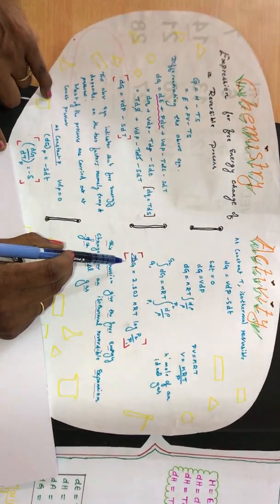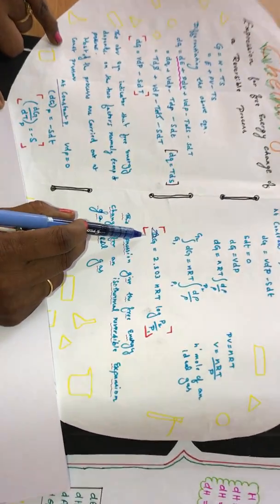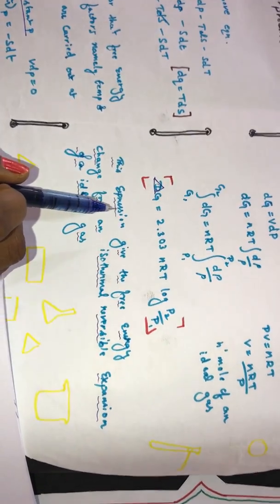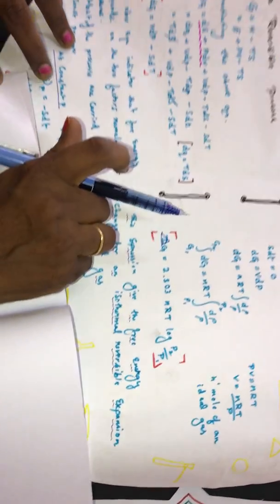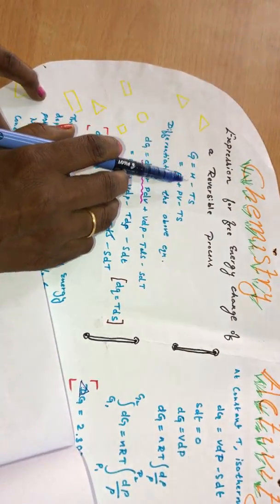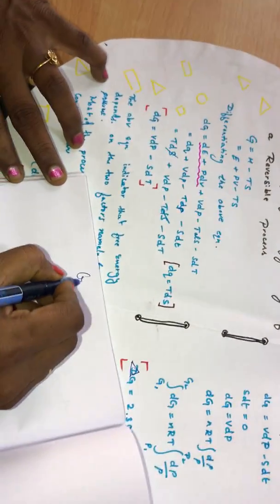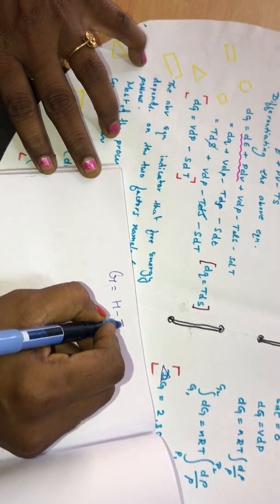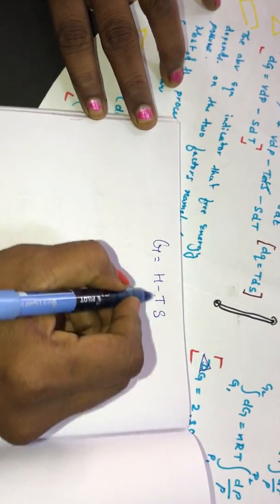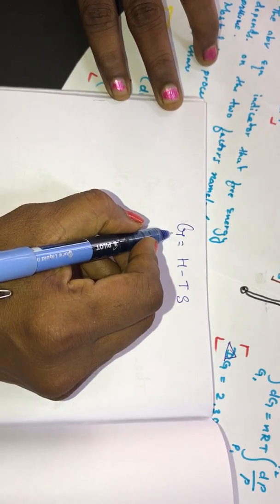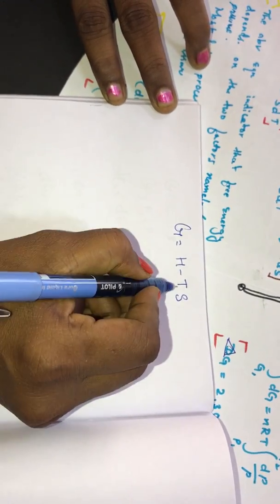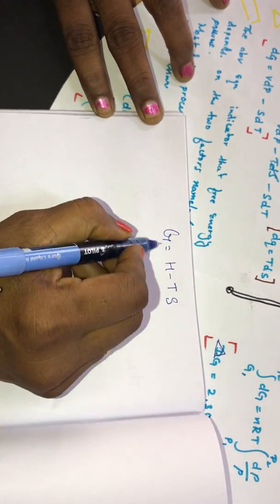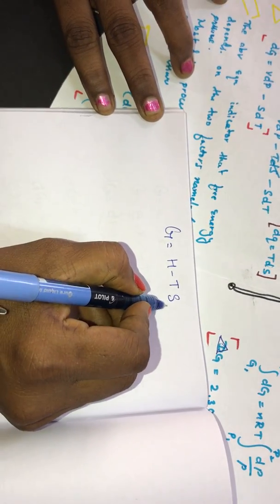Now we will see how to derive the expression for delta G for an isothermal reversible process. We start with G is equal to H minus T S. This is the well-known thermodynamic expression showing how free energy G, enthalpy H, temperature T, and entropy S are related.